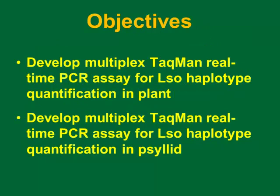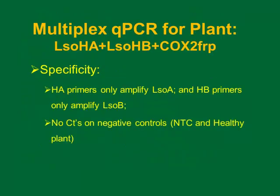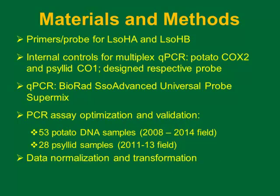The objectives were to develop a multiplex TaqMan real-time PCR assay for haplotype quantification in plants as well as in the psyllid. From the primers that we screened, we chose the most consistent and sensitive primers — one set each. Then we developed the respective probes. For the internal control, for the potato we use COX2, and the psyllid CO1.